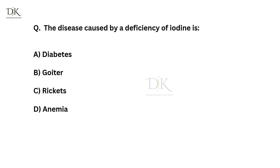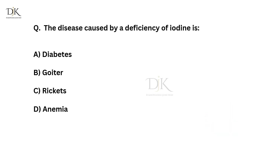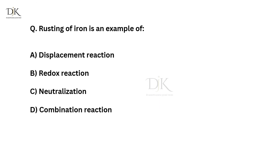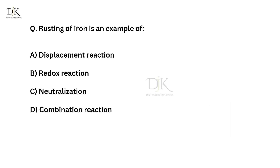The disease caused by a deficiency of iodine is? The right answer is goiter. Rusting of iron is an example of? The right answer is a redox reaction.